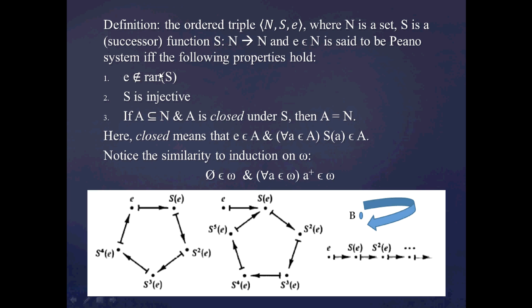The first two postulates would not be enough to rule out something like this, so you need the third one. In this case, it's possible to take a subset of this entire thing, have it be closed under s, and have it not be equal to N. So that subset would just be — take this line here, all the stuff here.